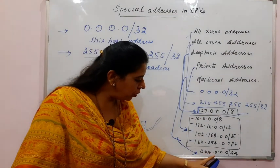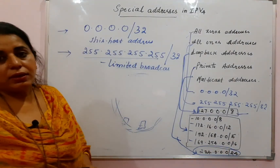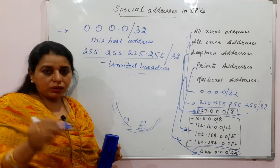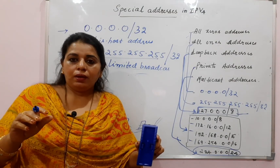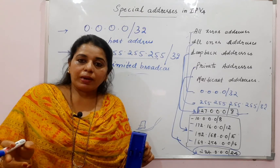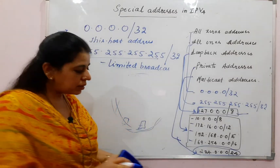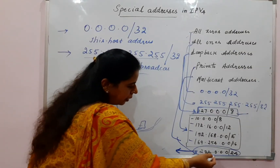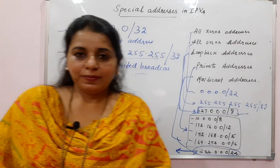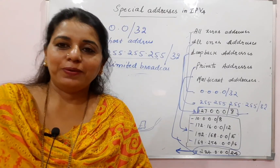The fifth category is multicast addresses. The block is 224.0.0.0/4. One-to-one communication is unicast; one-to-many is multicast. In unicast, every device gets one unique IP address, whereas in multicast, a group of hosts shares one IP address from this block. More detail on multicast routing and multicast addresses will be covered in a dedicated lecture. Hope you have understood the concept of special addresses in IPv4. Thank you, take care, bye.